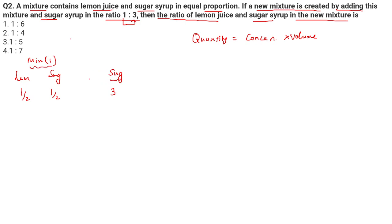When I'm mixing this mixture with this pure component, the quantity of lemon is going to remain constant. For example, if we have a glass of milk and I start pouring water into it, the concentration of milk is going to change — it becomes thinner and thinner — but the quantity of milk in the glass remains constant. The volume goes up because I'm pouring water, but the quantity of milk is constant; only its concentration is changing. Similarly here, the quantity of lemon is constant.